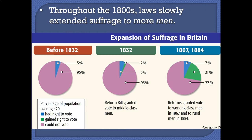Over time, laws are going to be passed that gradually, slowly extend suffrage — the right to vote — to more and more men. First it's going to be given to middle class men, then working class men, and rural voters, and so forth. But it's men only, not women. And as you can see, we've gone from about 5% of people voting to somewhere in the ballpark of about 28% or so voting.